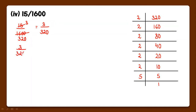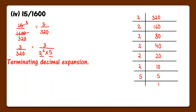We do the prime factorization of 320. So we can write 3 upon 2 raised to the power 6 into 5 raised to the power 1. Now we have got powers of 2 as well as 5 in the denominator. So it is terminating decimal expansion.